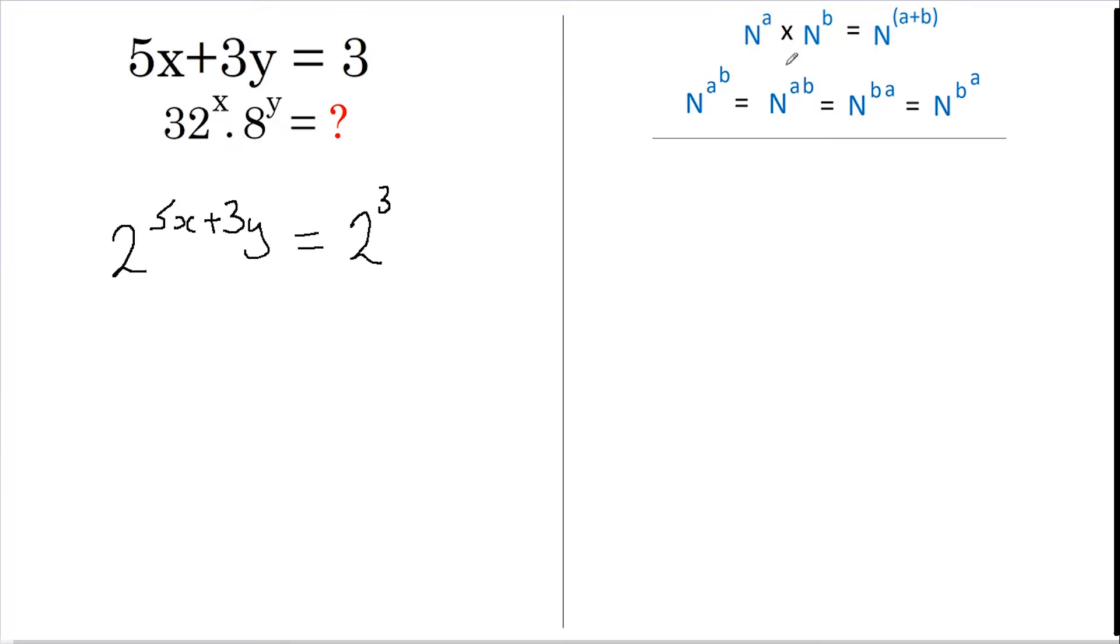We know that a number raised to a power multiplied by the same number raised to a different power is equal to that same number raised to the powers added together. Here we have powers added together, so I'm going to rewrite this as 2 to the power of 5x multiplied by 2 to the power of 3y, and this still equals 2 to the power of 3.